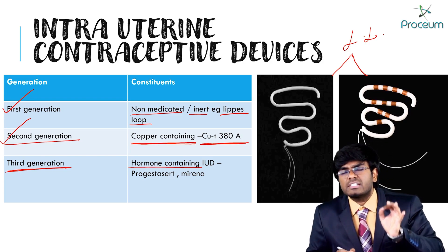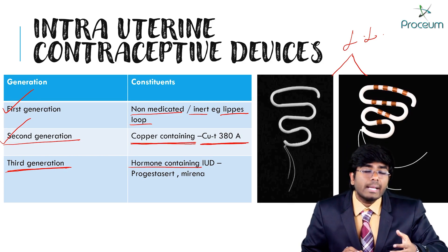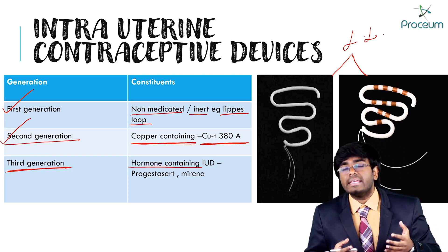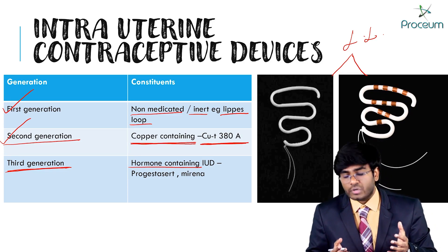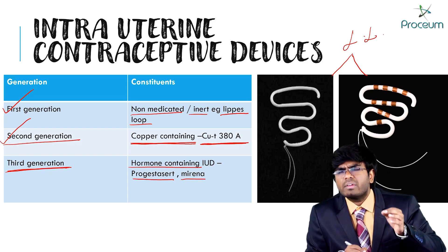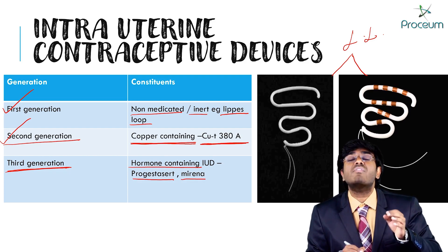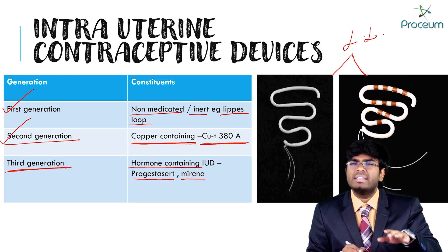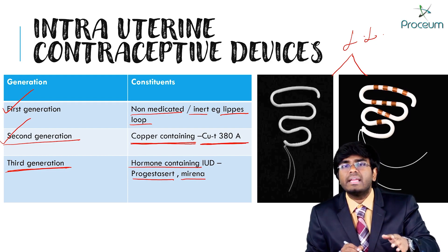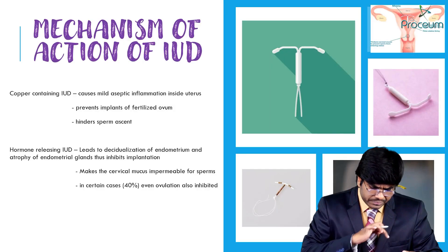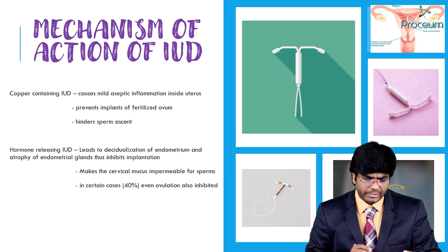Third generation intrauterine contraceptive devices contain hormones within themselves — especially progesterone. In the exam, hormonal IUDs are third generation. Examples are Progestacert and Mirena. One important point: Mirena is a levonorgestrel-containing IUD.